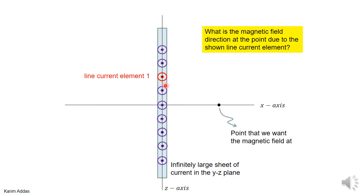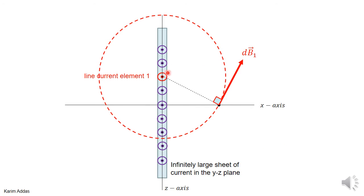Imagine the sheet as consisting of an infinite number of thin infinite lines placed next to each other — that makes a sheet. Consider just one of those thin lines: what is the magnetic field it produces at this point? You know that for an infinite thin line, the magnetic field goes around in circles, so at this point it makes an angle like this — 90 degrees to the line, but at some angle in space.